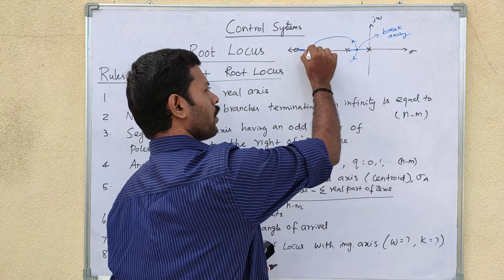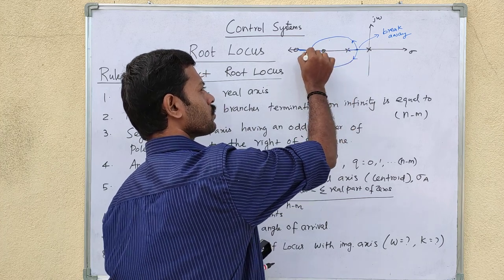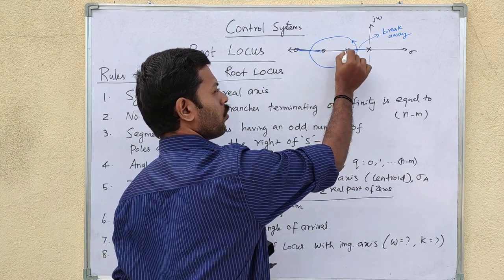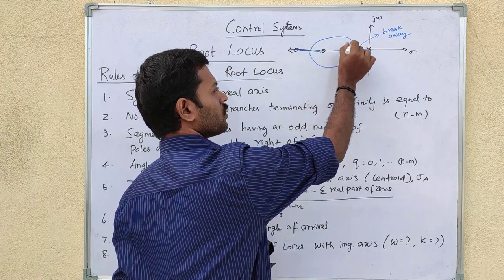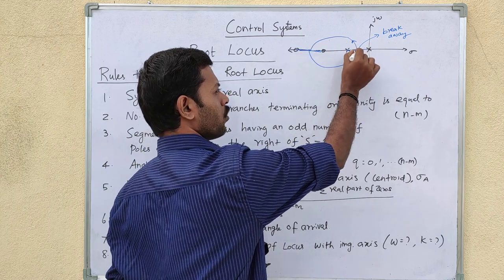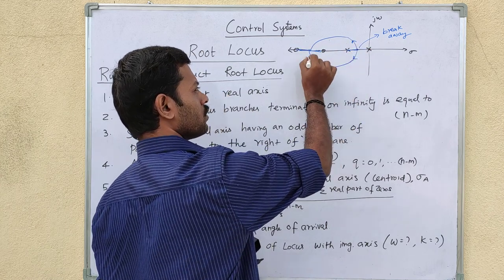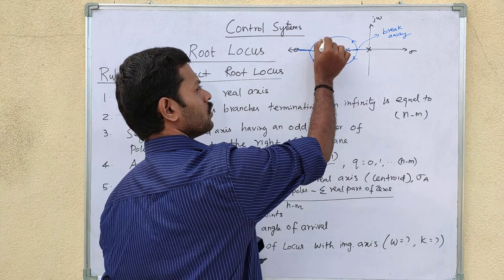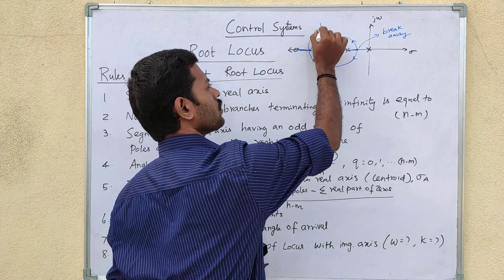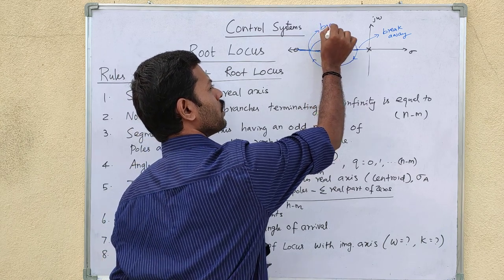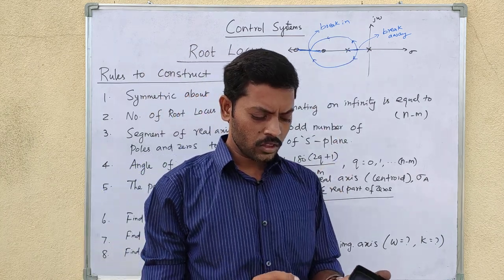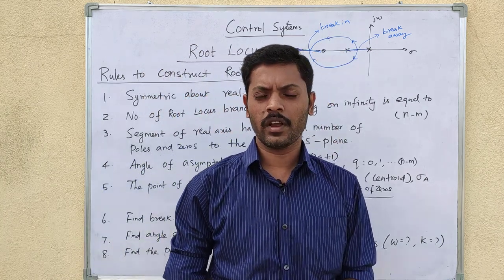There is also a break-in point. Here the poles approach from below, and the branches break into the real axis at the break-in point. So these are the breakaway and break-in points.